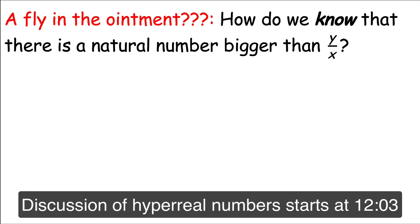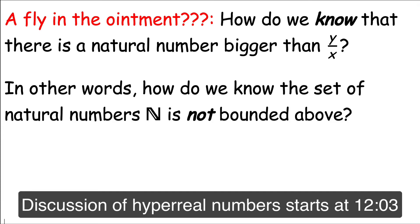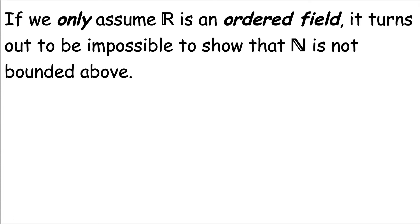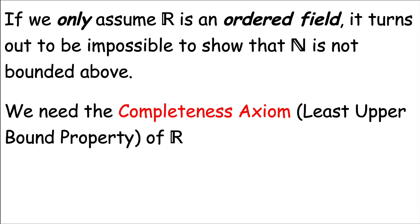How do we know we can apply the ceiling function? If there were no natural number bigger than y over x, that would mean y over x is an upper bound for the set of natural numbers. So the question is equivalent to: how do we know that the set of natural numbers N is not bounded above? If we only allow ourselves to assume the real numbers form an abstract ordered field, it turns out to be impossible to show that N is unbounded — we need some other axiom. In fact, the completeness axiom is good enough.